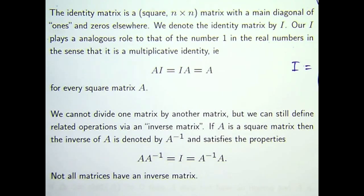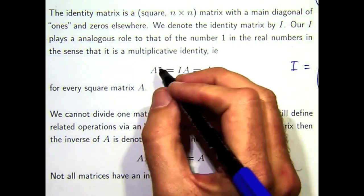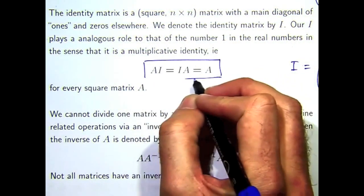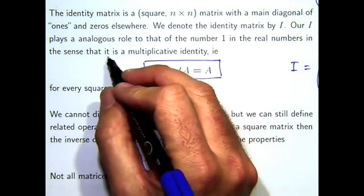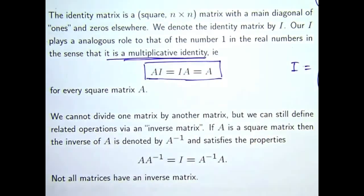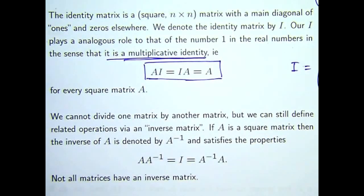Now, the identity plays an important role similar to that of number 1 in the real numbers in the sense that it is a multiplicative identity. In other words, if you take a matrix A and you multiply through by I on either side, it doesn't matter, then you get the matrix A, the thing that you started with.